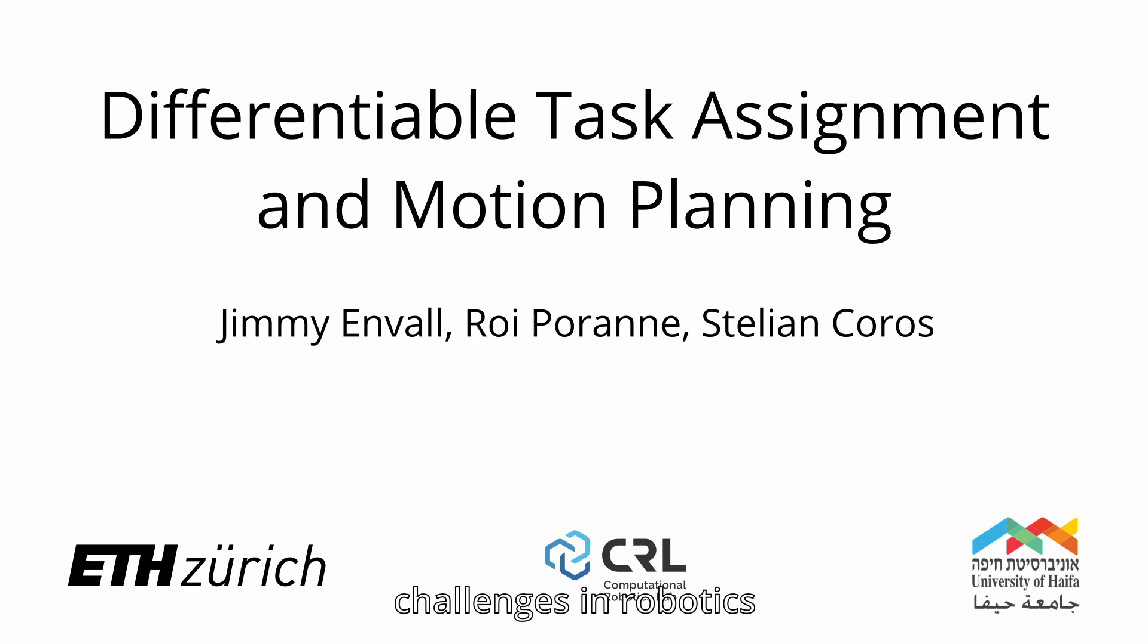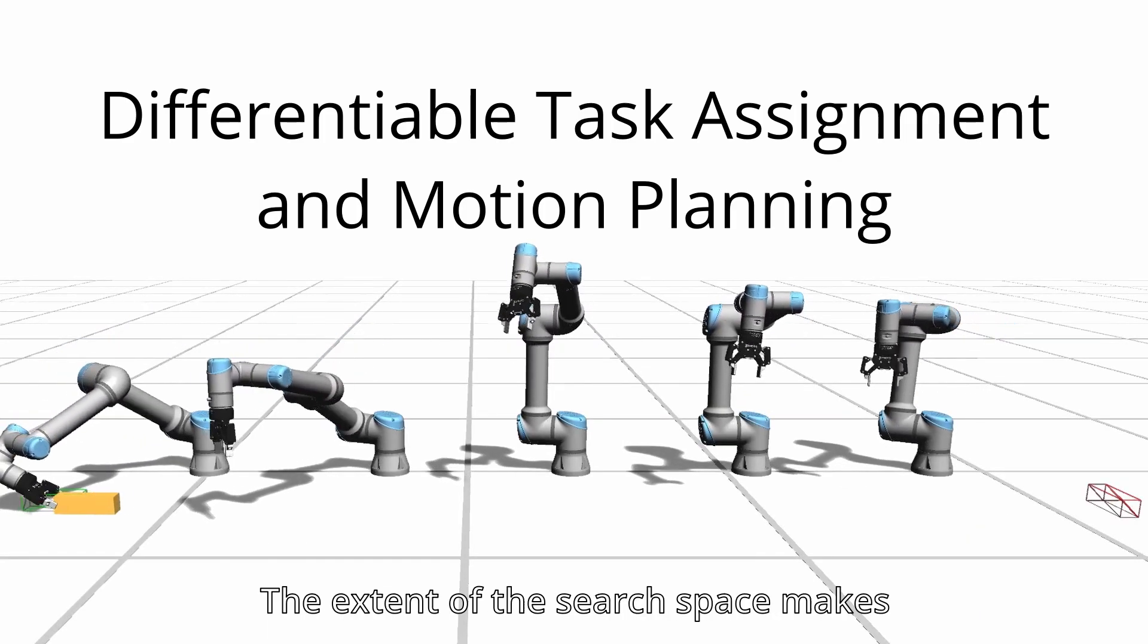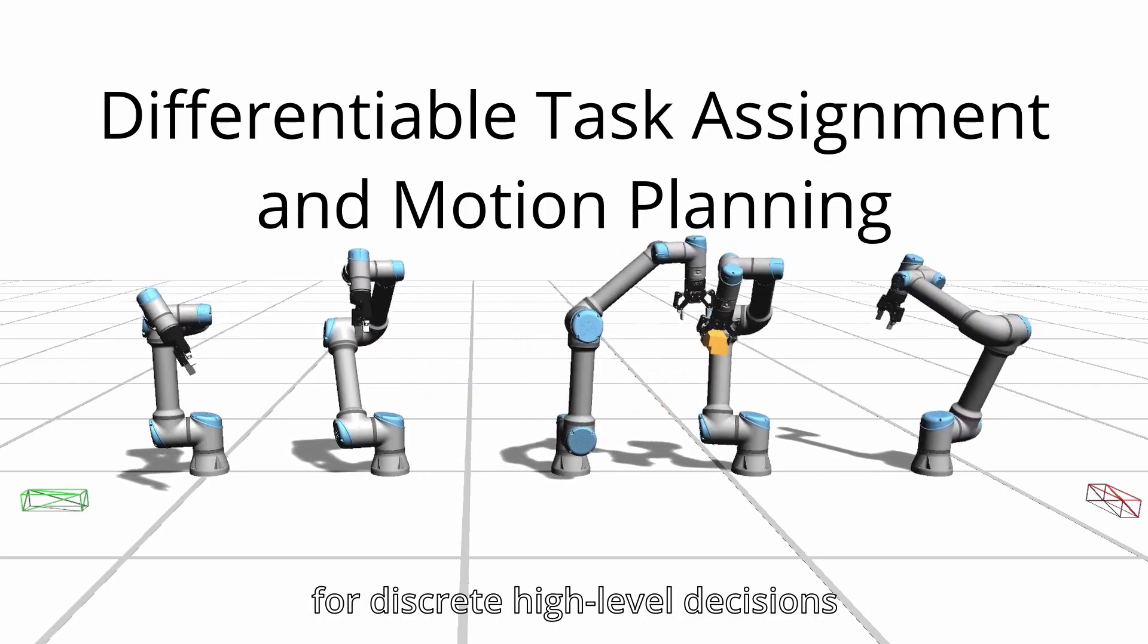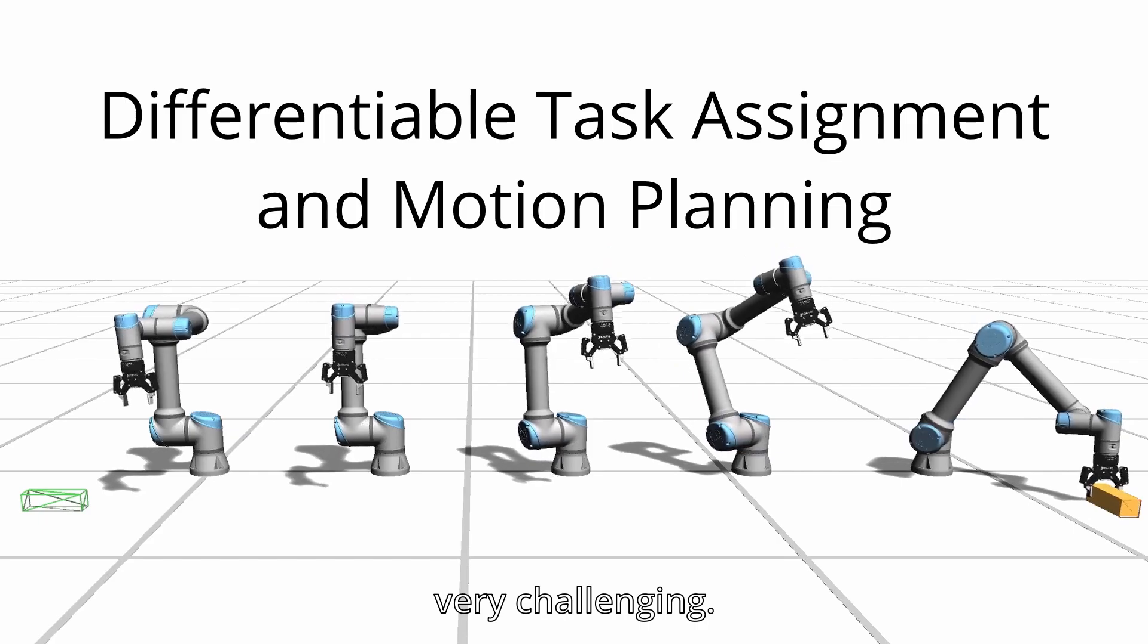Task and motion planning is one of the great challenges in robotics, and involves joining continuous motion optimization together with discrete high-level task planning. The extent of the search space makes simultaneously solving for discrete high-level decisions and low-level trajectories very challenging.